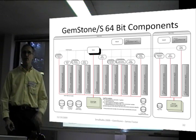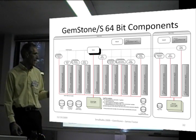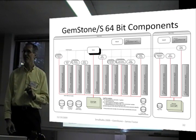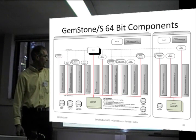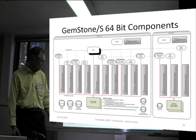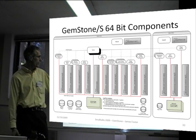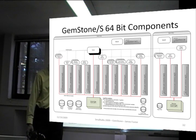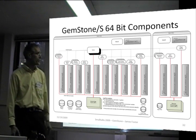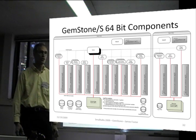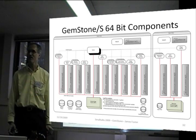This picture shows many of the components — I'm not expecting you to be able to see it clearly. It's mostly to give you an idea of the number of parts and their complexity. Here is the stone, here is the repository: application gems, symbol gems, garbage collection gems, page servers, shared page cache monitor. You can have remote hosts and so on. Each of these has log files associated with each process, so you can look at the log file to see if something goes wrong.